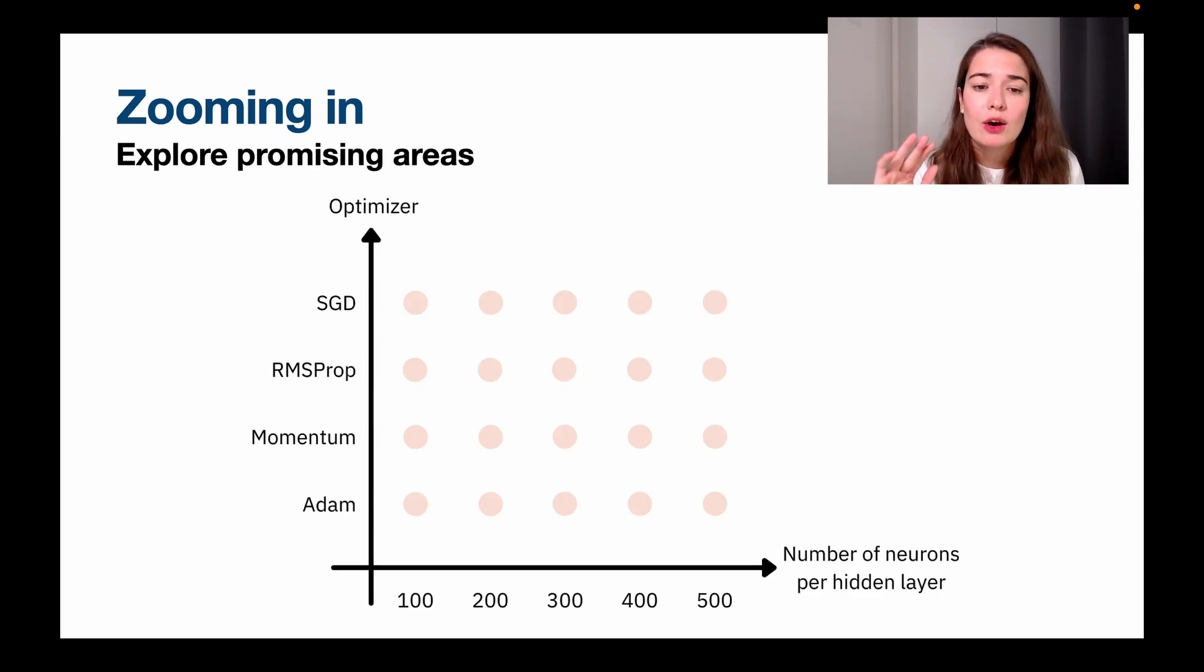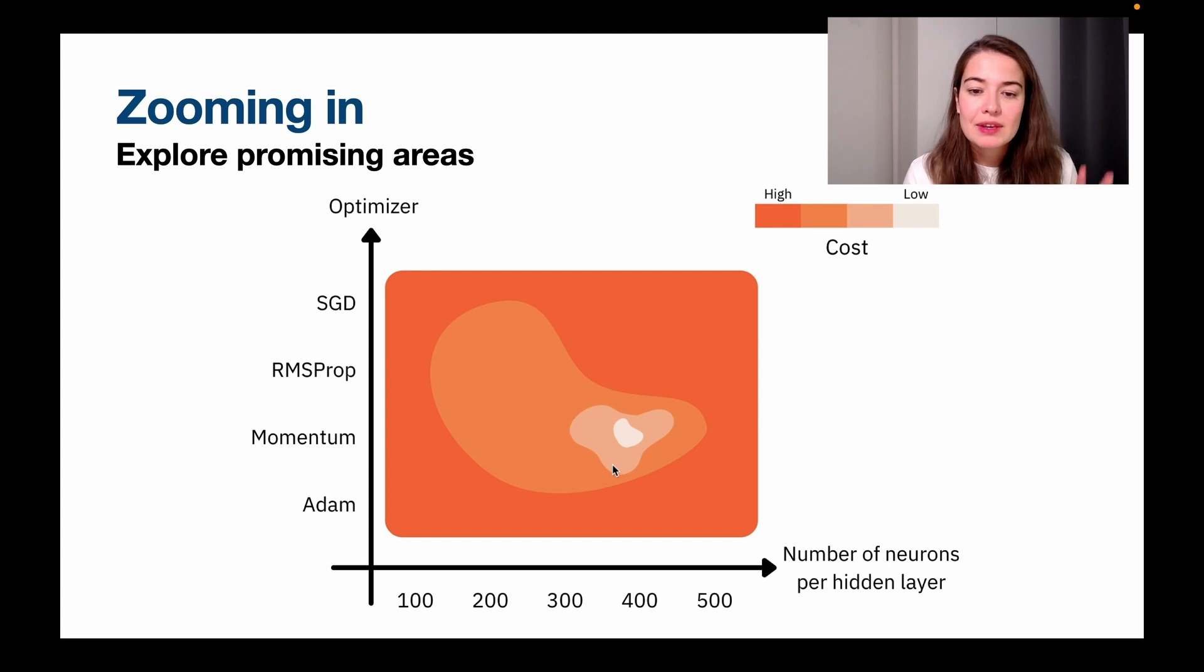I'm again giving the example of trying to optimize only for two hyperparameters, the optimizer and the number of neurons per hidden layer. So if we think about it on a three-dimensional sense, we can see actually that there is some sort of an area. And as we can see here, the ones that with the darker orange are going to be higher cost. And the lighter the orange, the lower the cost is going to be. And basically, we're going to have some sort of relationship between the values that our hyperparameters take and the cost, or the error, however you want to call it.